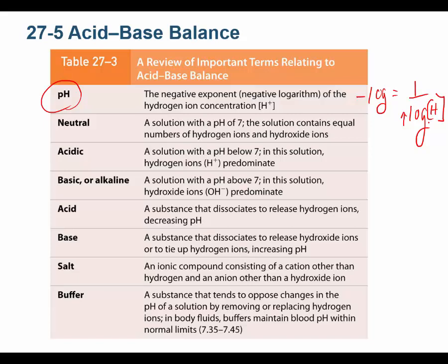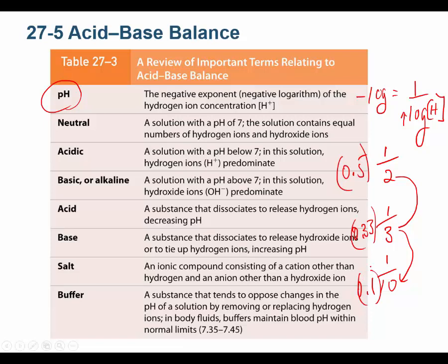For example: 1/2 means the hydrogen ion concentration equals 2; 1/3 means it equals 3; 1/10 means it equals 10. So the hydrogen ion concentration is going from 2 to 3 to 10 — it's going up — but my number is going down: 0.5, 0.33, 0.1. You can see why the pH scale is opposite. It's because pH means the negative log of the hydrogen ion concentration.